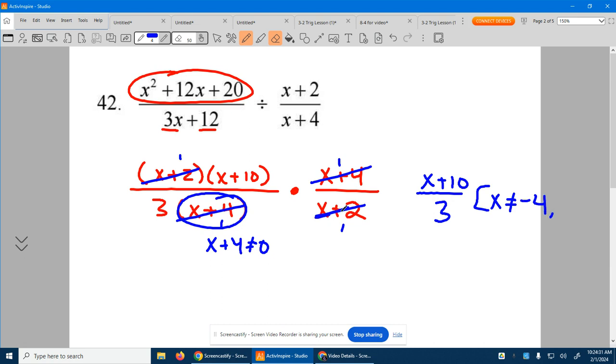And here the x plus 2, so negative 2 was another excluded value that you wouldn't notice unless you went back to the original problem and tried to put those in. So this is what I'm looking for, but this is something you should make note of and know and understand.